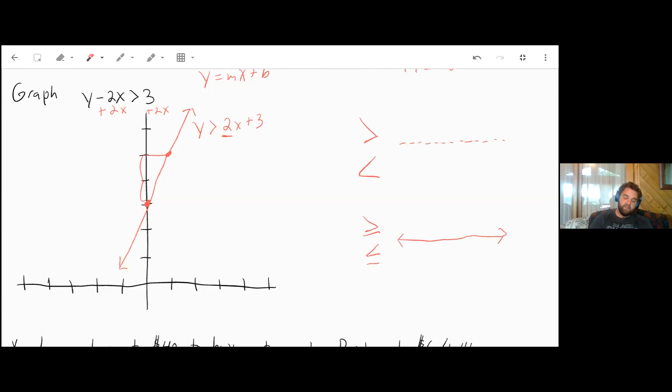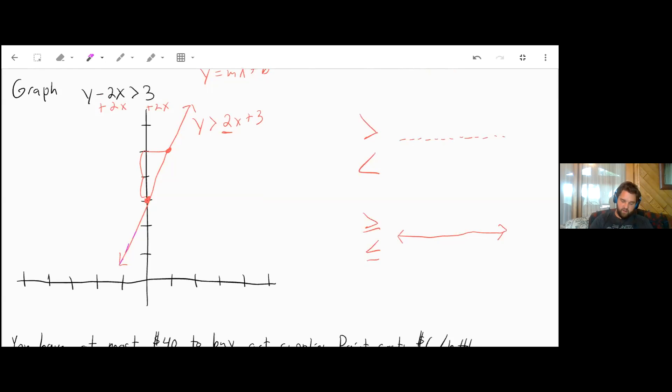Since this is strictly greater than, we need a dashed line instead of a solid line. We can still have arrows on the ends. Now I've got our dashed line going through, and now it's correct.